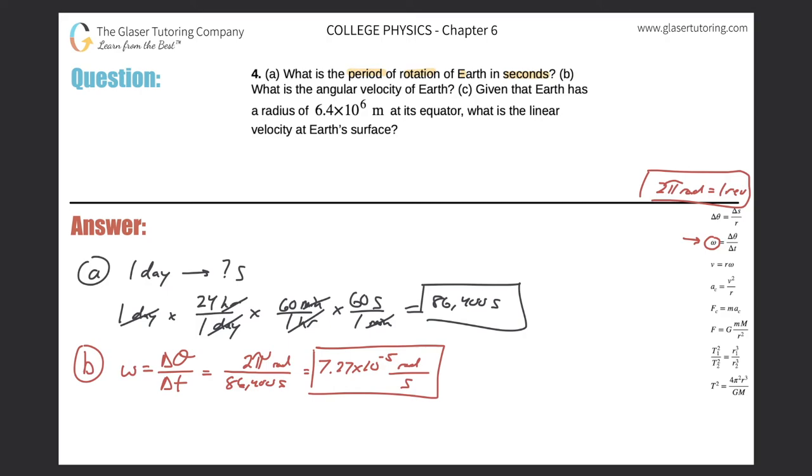Question C: Given that Earth has a radius of 6.4 times 10 to the 6 meters at its equator, what is the linear velocity? So this is really what we're after, in terms of how fast it's moving, or how fast we're moving on the circumference of the Earth. So now for letter C, let me write it over here. We need to now find an equation that relates angular velocity to tangential velocity, or just velocity overall. Take a look on the right hand side—that's this equation.